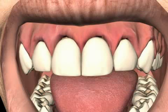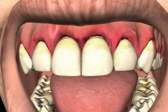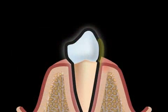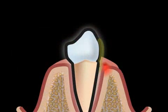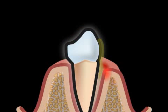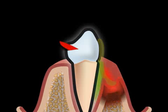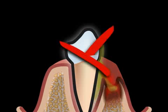Periodontitis, which is still often erroneously called periodontosis, is the official name for the abnormal inflammation of the periodontal apparatus. This inflammation invariably, and in most cases painlessly, leads to the loss of bone over the years. As can be seen in this animation, the result is loss of teeth.